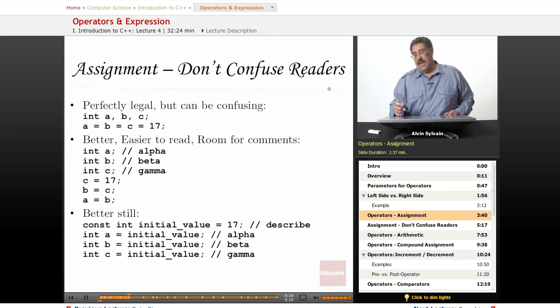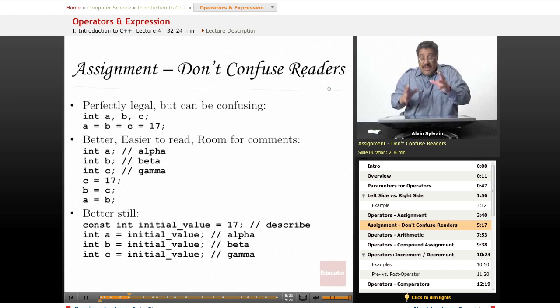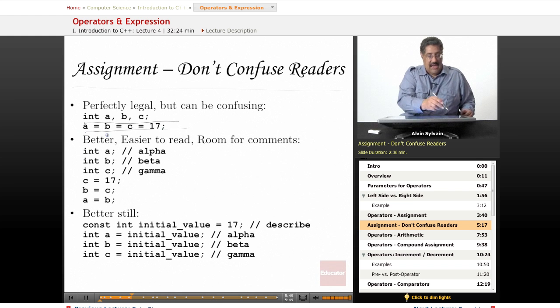A real quick thing on confusing your readers. It's more important that your code is readable by humans than it is to be readable by the computer. The computer doesn't care what you do. It will try to interpret it as best it can and do what it thinks you want to do. But, more time is spent with a human looking at code, trying to debug it, add features, whatever else, than it is for the computer to run things. You'll see this kind of code all the time. It's not always a bad thing. I don't like it. A equals B equals C equals 17.